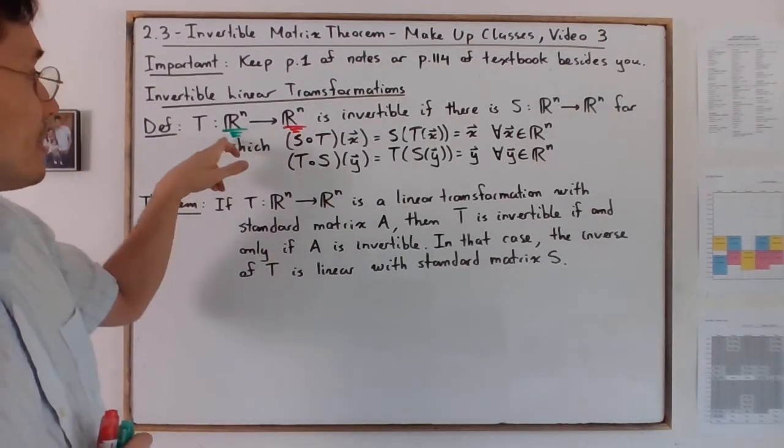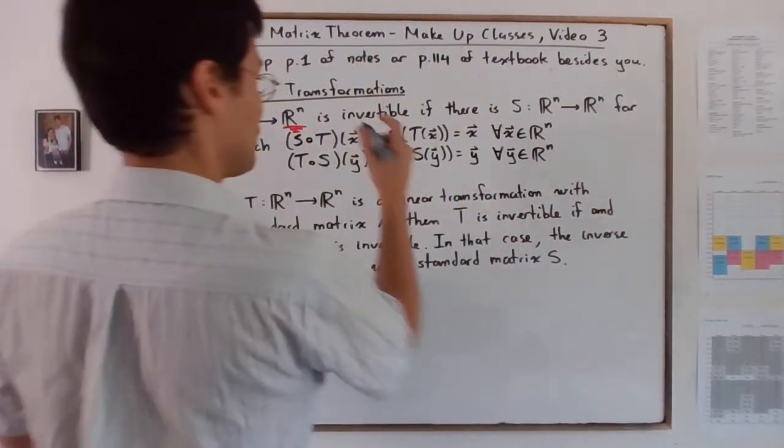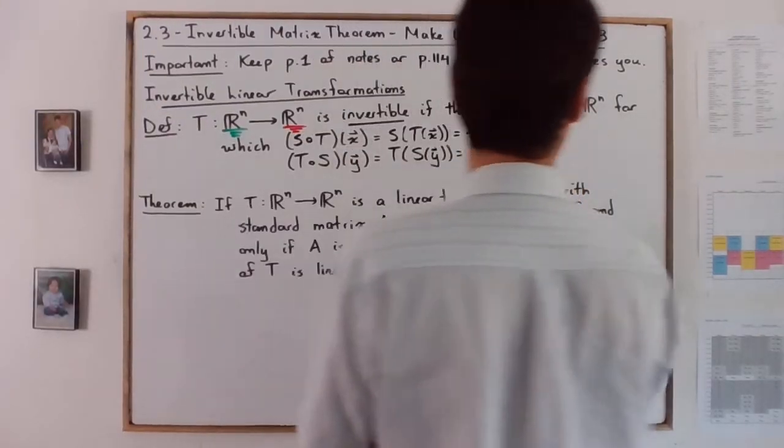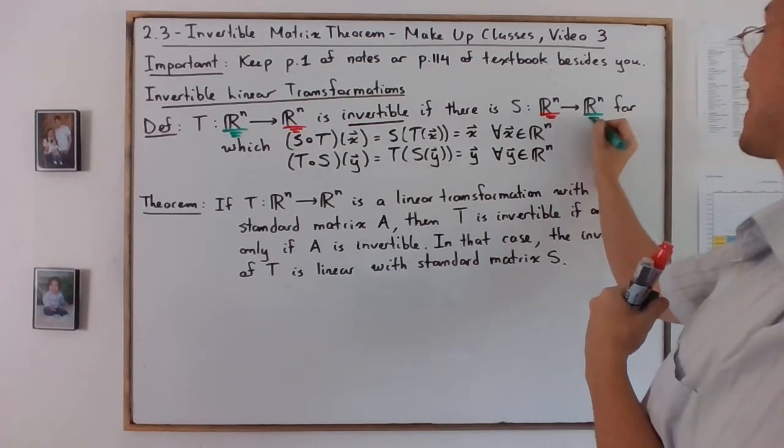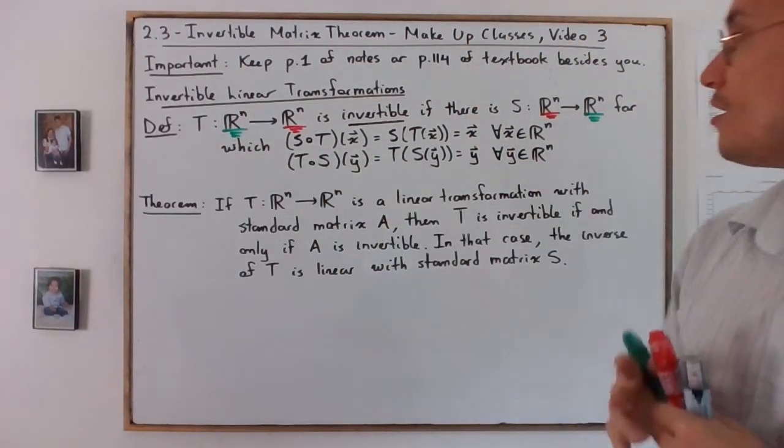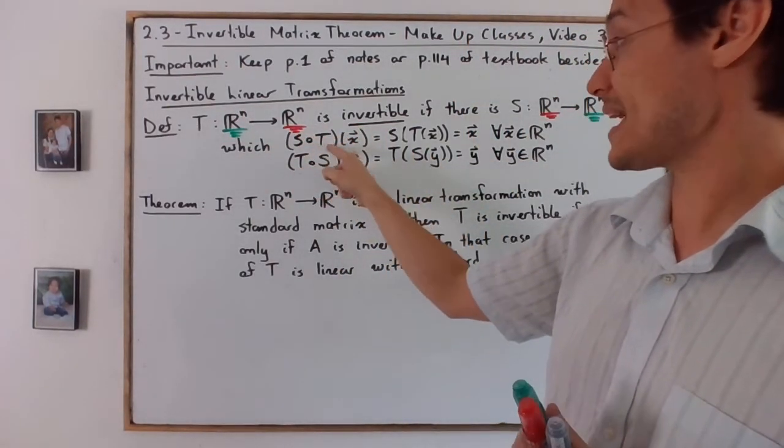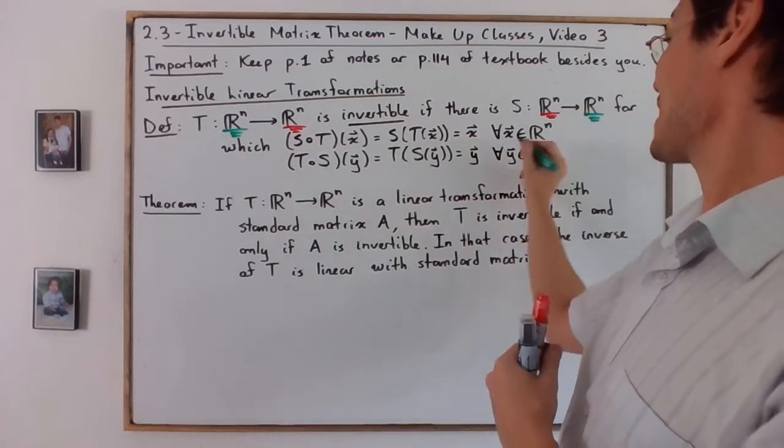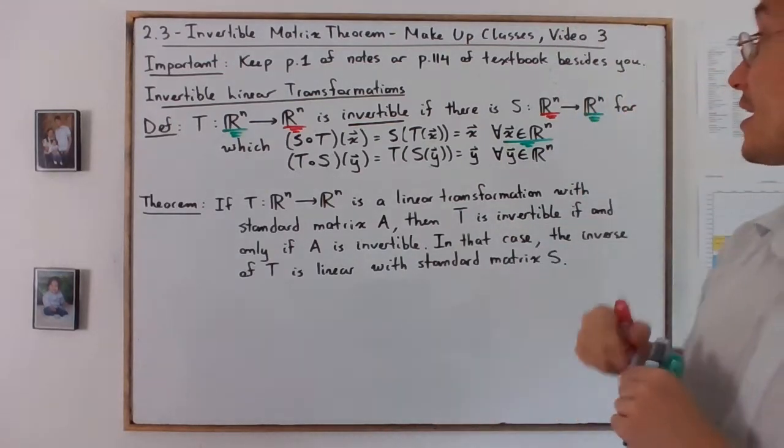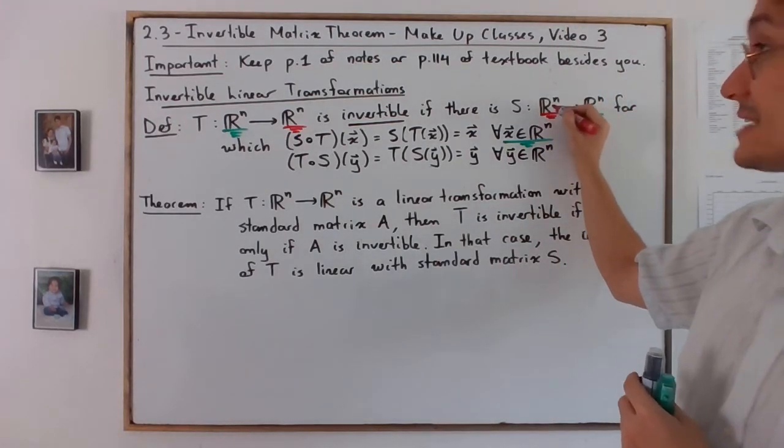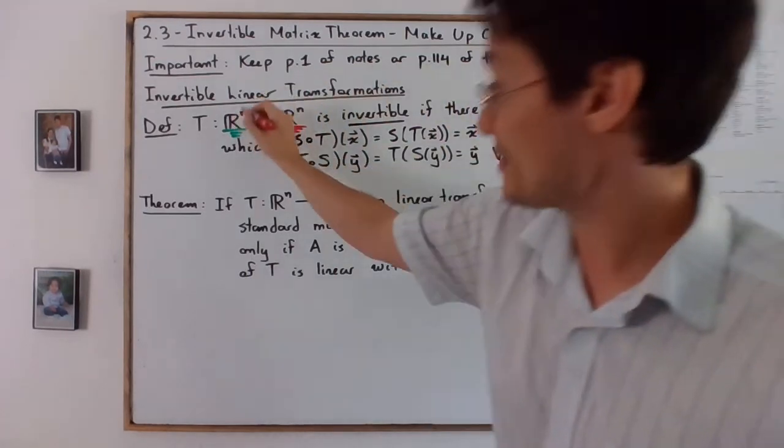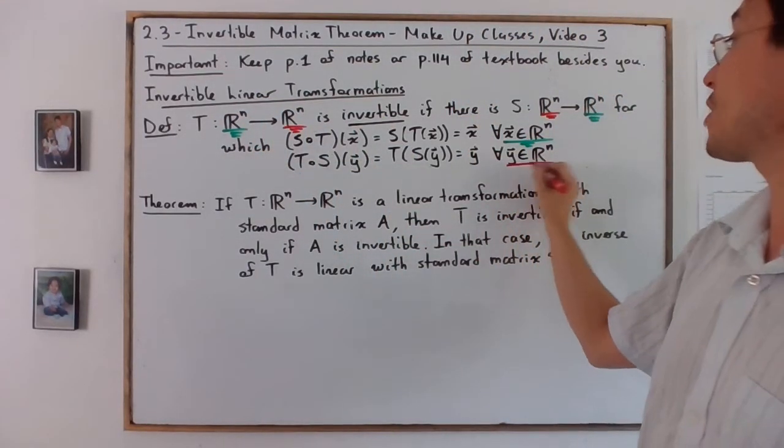T is invertible if there is a transformation S that goes back from R^n to R^n, taking vectors in the codomain of T and returning vectors in the domain of T, for which if you compose S with T it's going to give you back any vector x. But it can be done the other way around too: if you take a vector in the domain of S, use S on it to get a vector in the domain of T, then apply T again, you're going to get back the same original vector.